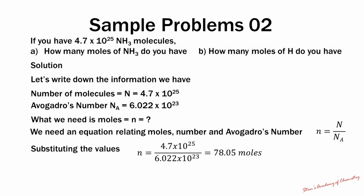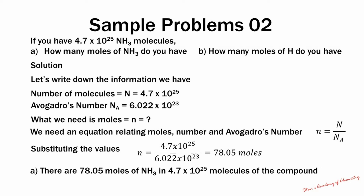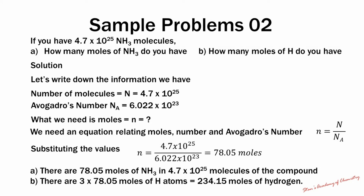Since each molecule of ammonia contains 3 hydrogen atoms, the number of moles of hydrogen is equal to 3 times the number of moles of ammonia, or 234.15 moles of hydrogen atoms.